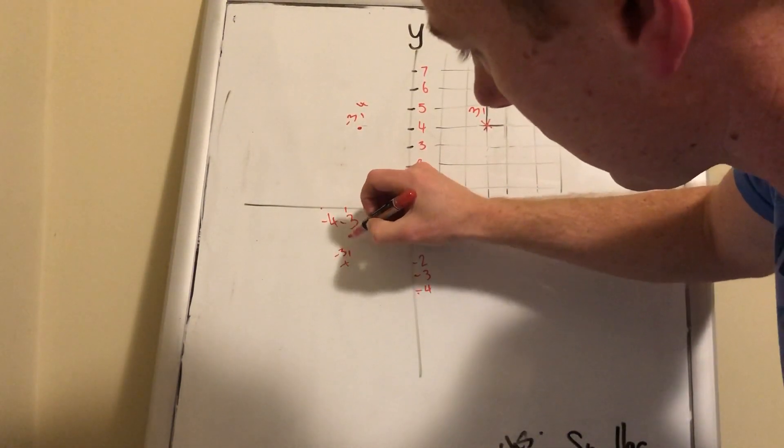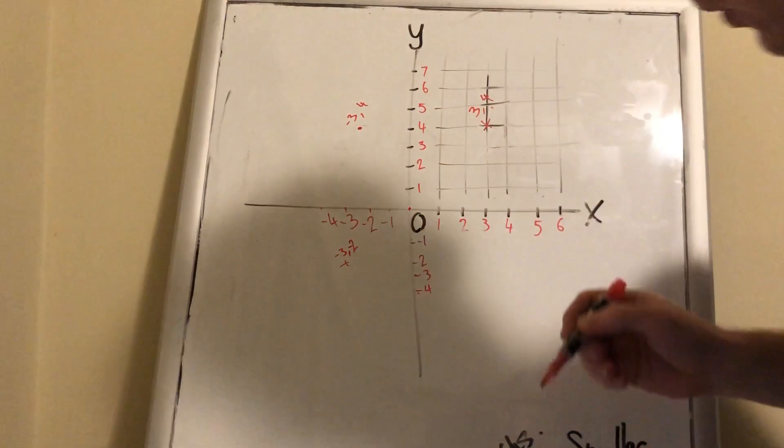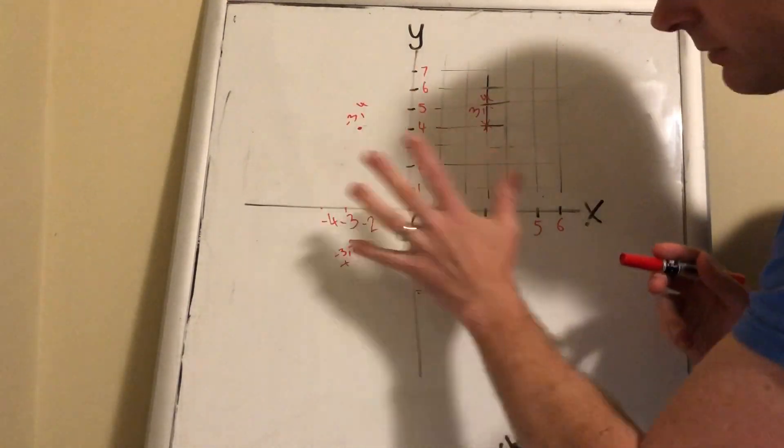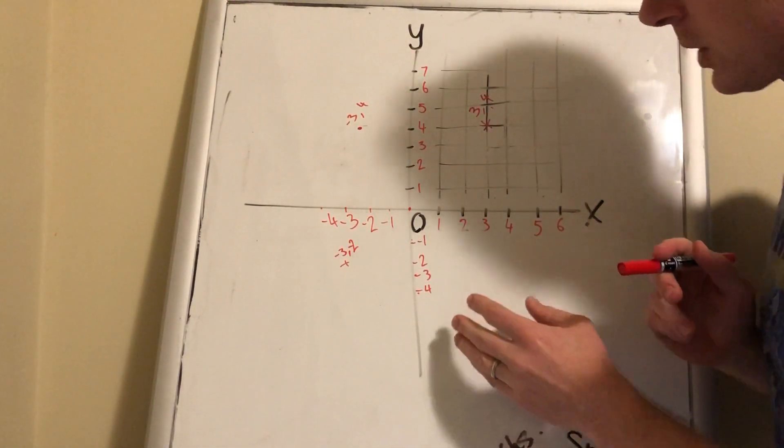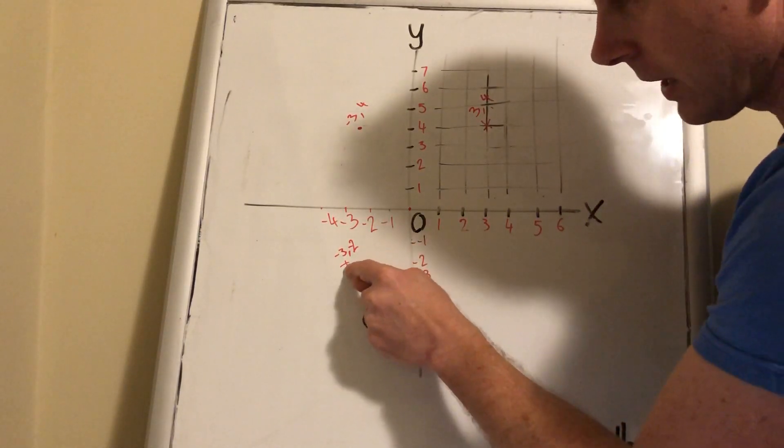And I write that as minus 3, minus 2. It's a bit messy and I've done this pretty roughly, but I'm working the best I can with these tools. So there's our point.